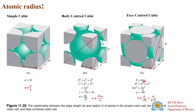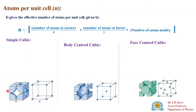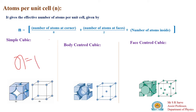The effective number of atoms per unit cell is calculated using: number of corner atoms divided by 8, plus face atoms divided by 2, plus atoms inside. For simple cubic, there are no atoms at the faces and no atoms inside — only corner atoms. So n equals 8 divided by 8, which is 1. Therefore, the effective number of atoms for a simple cubic unit cell is n = 1.